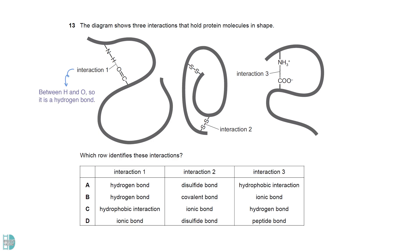The first interaction occurs between a hydrogen and an oxygen. It is a hydrogen bond. Interaction two involves two sulfur. So, it is the disulfide bond. The disulfide bond is a type of covalent bond. Three occurs between two charged R groups. It is an ionic bond.